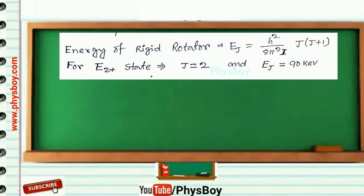For E2+ state, j equals 2 and energy corresponding to this 2+ state of the molecule is given in the question which is equal to 90 keV.